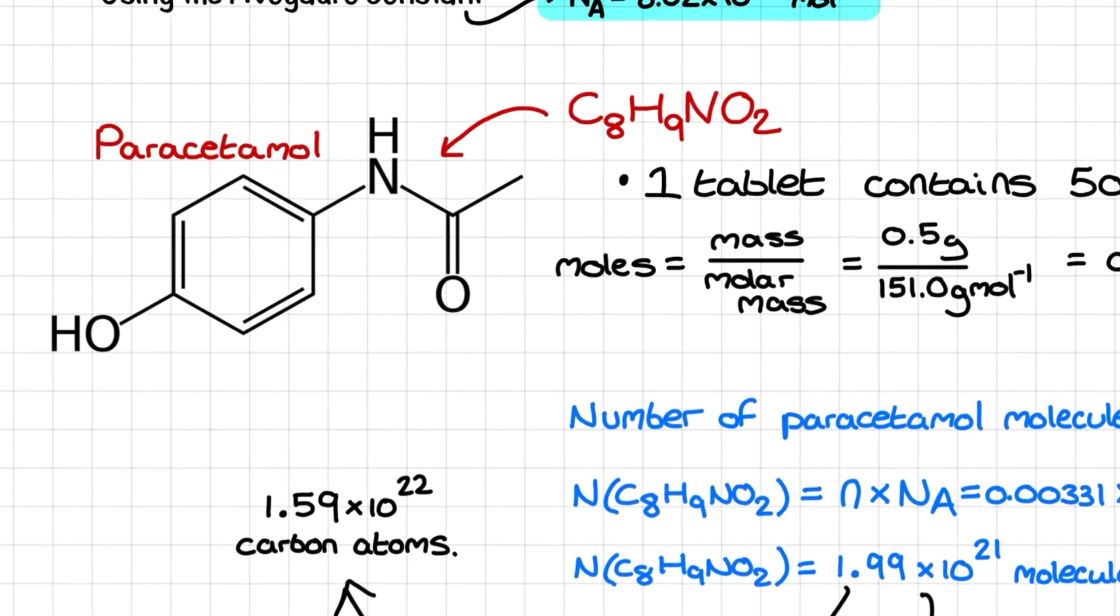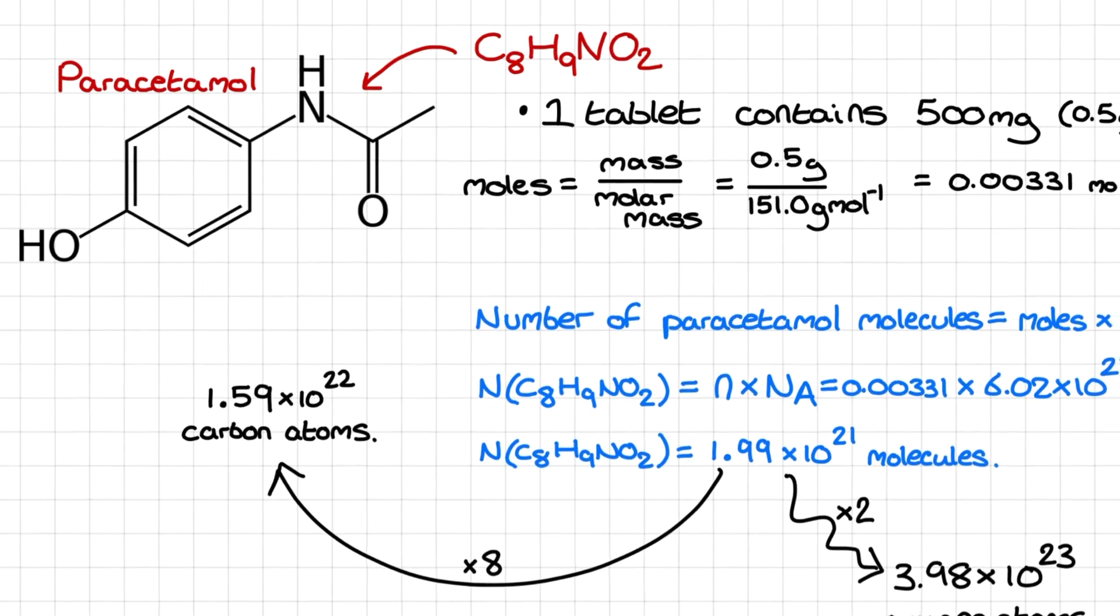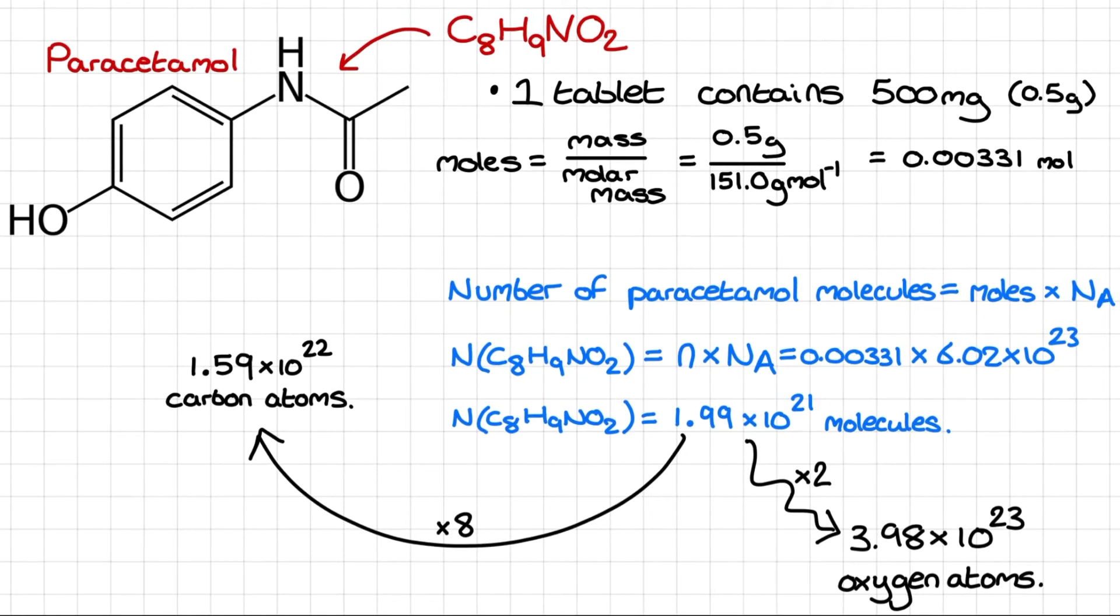I'm going to use information about paracetamol tablets to show you its use in chemical calculations. My first job is to calculate the number of moles in my sample. For the paracetamol in one tablet, we have a 0.5 gram dosage which, when we divide by the correct molar mass value, gives us 0.00331 mole of paracetamol per tablet.